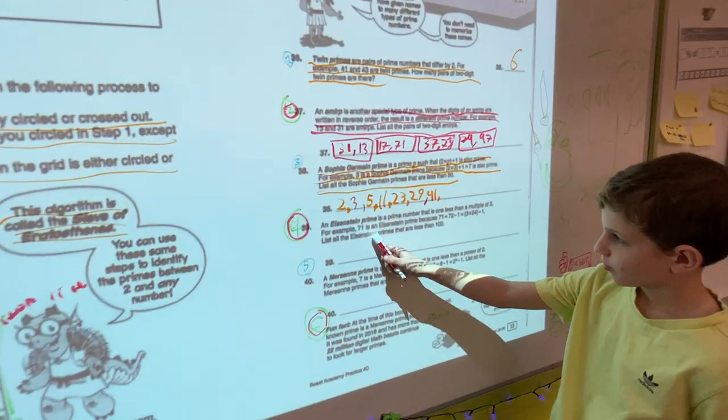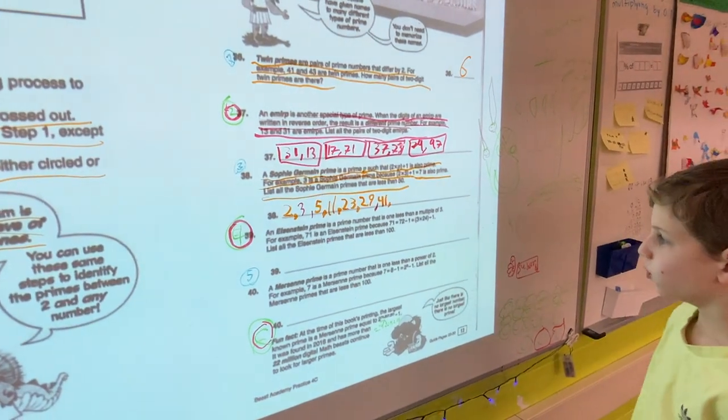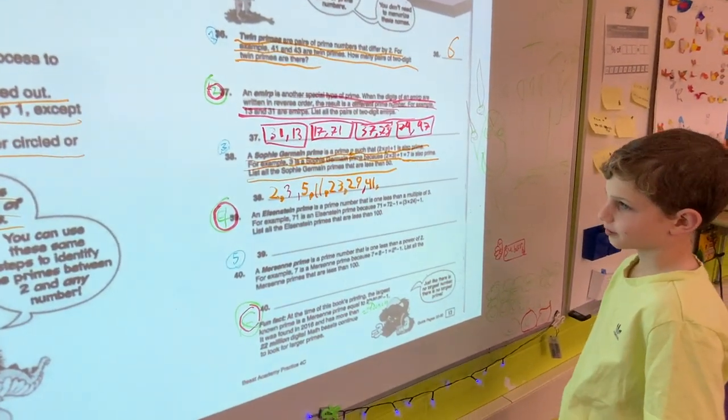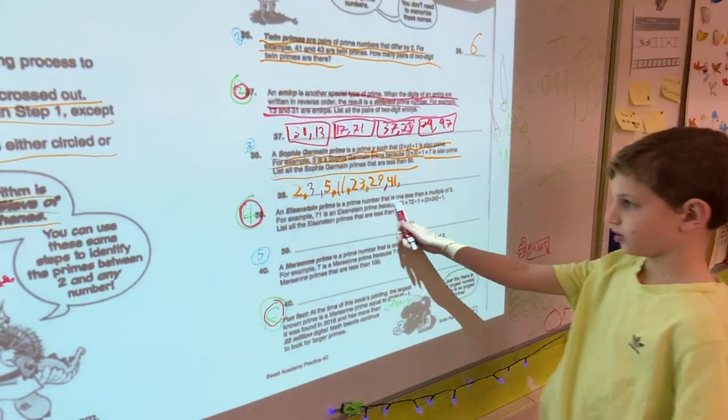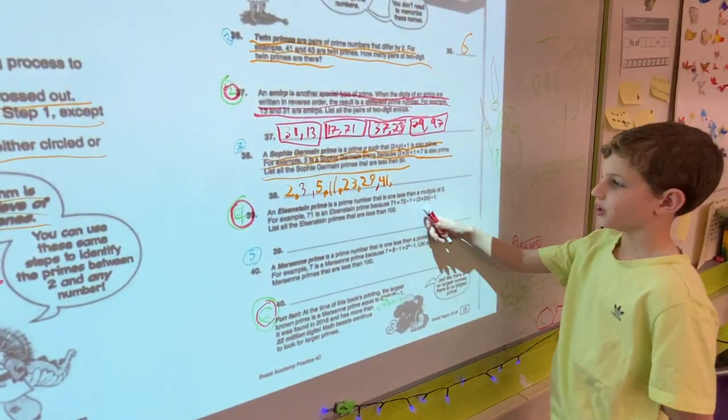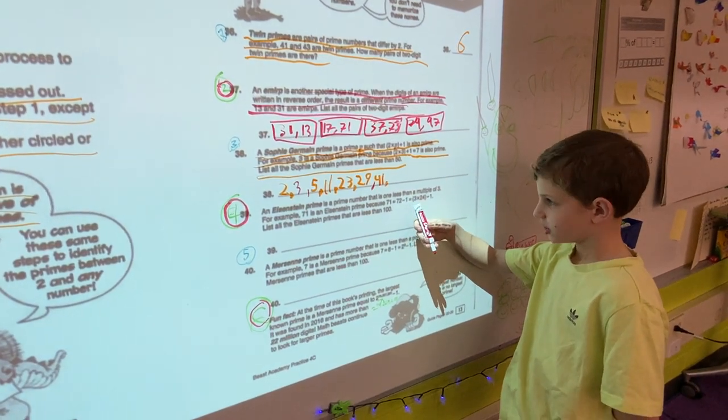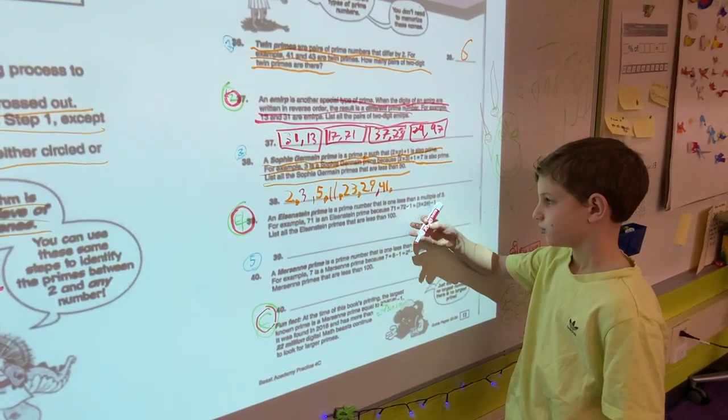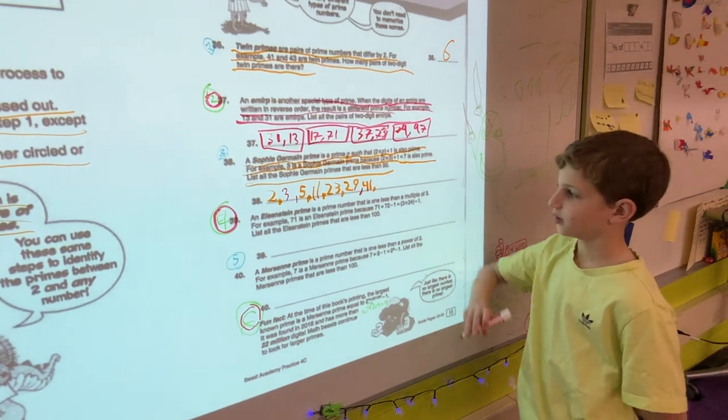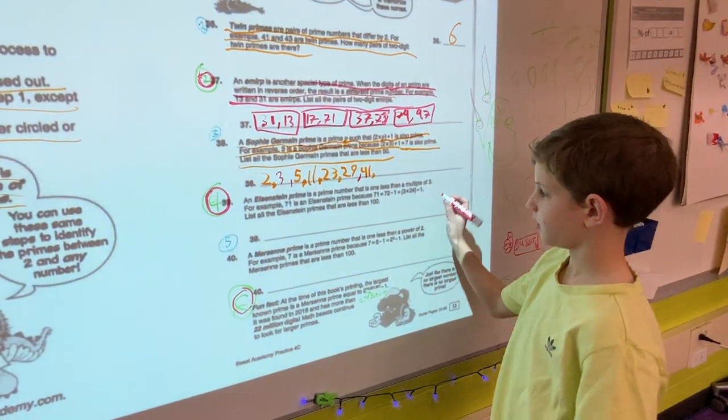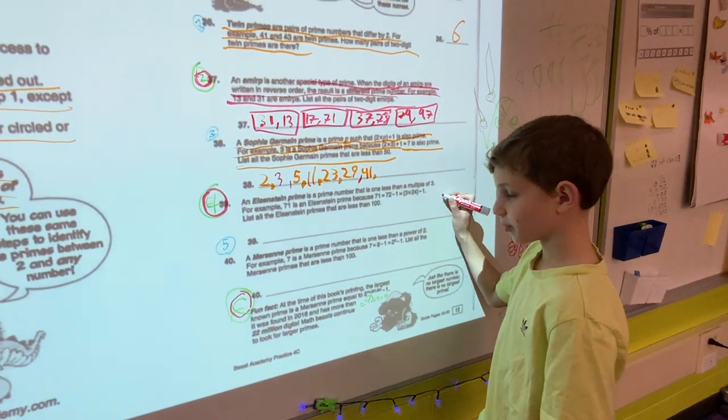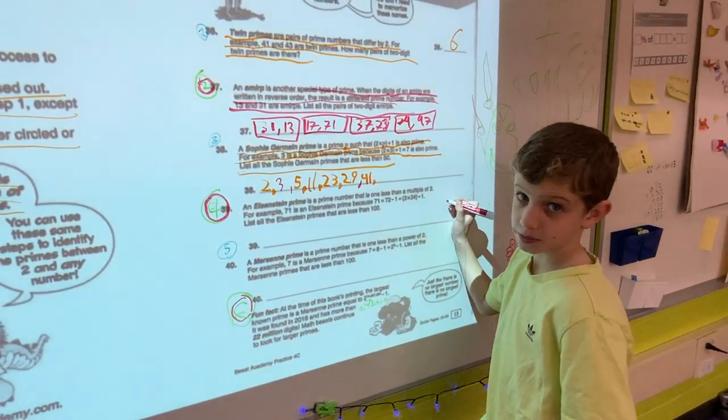Now, an Einstein prime is a prime number 1 less than a multiple of 3. For example, 71 is an Einstein prime because 71 equals 72 minus 1, which is equal to 3 times 24 minus 1. So basically, a prime number plus 1 is a multiple of 3.